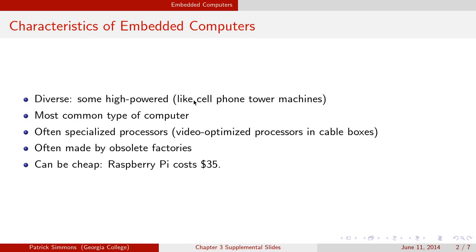For instance, the computers inside cell phone towers that connect to cell phones, route their calls, and maintain radio signals — that's a pretty intense job. Those computers, even though they're embedded, have specialized processors. They qualify as embedded computers yet are as powerful as, or more powerful than, a non-embedded computer. They're better at their job than a normal computer would be. This is very common in embedded computers — to have a specialized processor.